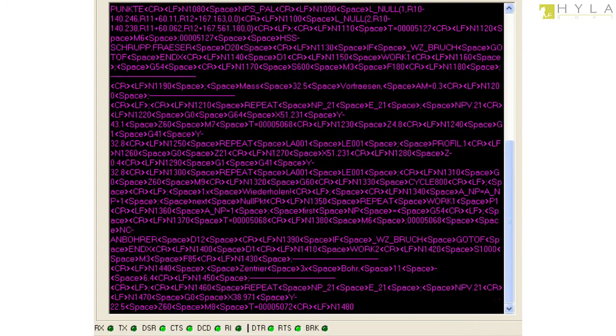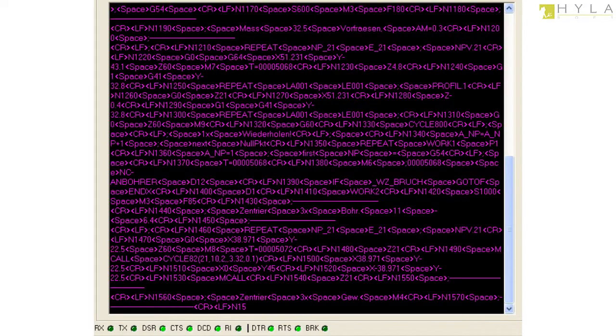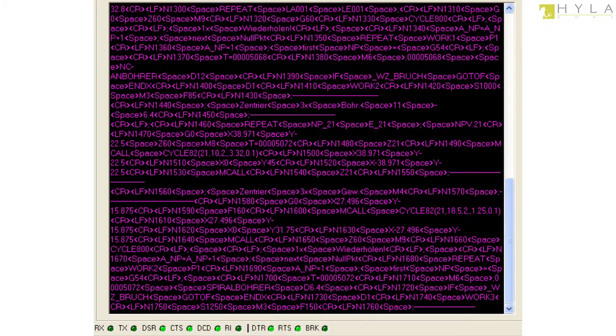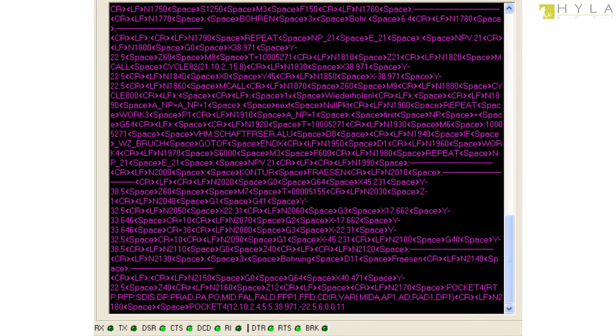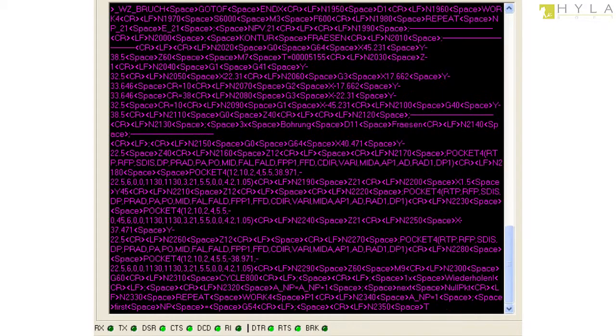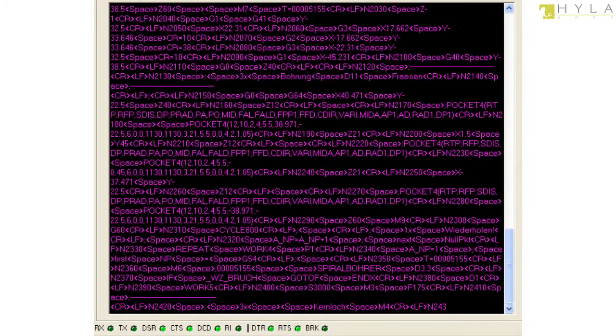In this example, we can see in real time an NC program being exchanged between two serial ports. This allows us to quickly determine connection parameters such as data transfer rate or start and stop characters necessary for program execution.